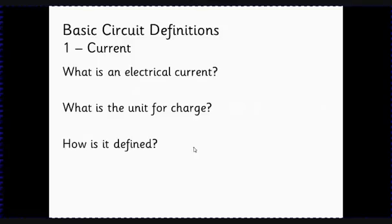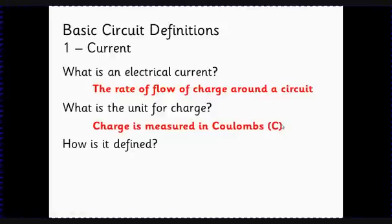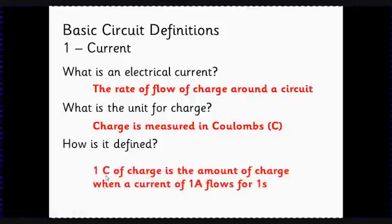Our basic definitions: Current - what is an electrical current? An electrical current is the rate of flow of charge around a circuit. In our scheme, this will almost always be electrons flowing around a circuit, but it could be ions carrying the charge. The unit for charge is the coulomb. The definition of the coulomb is that one coulomb of charge is the amount of charge when a current of one amp flows for one second.